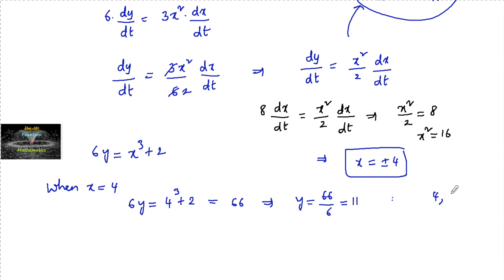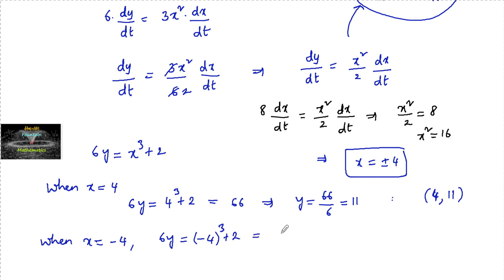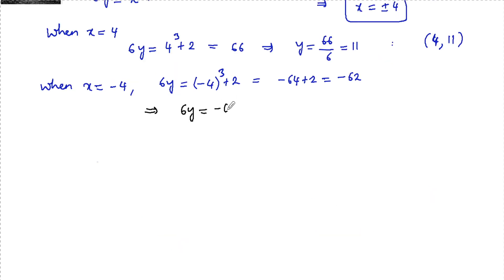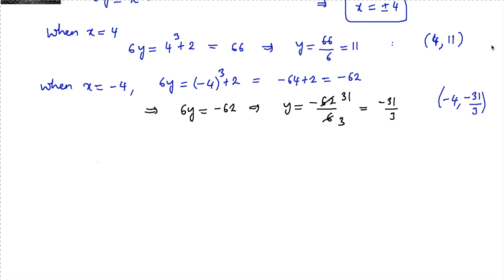We got one point: (4, 11). When x = −4, we have 6y = (−4)³ + 2 = −64 + 2 = −62. So y = −62/6 = −31/3, giving another point (−4, −31/3).